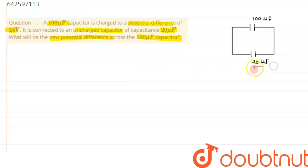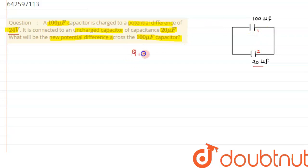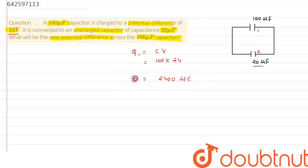One capacitor has a capacitance of 100 microfarad and another has a capacitance of 20 microfarad. Initially the 100 microfarad capacitor is charged to a potential difference of 24 volts. Therefore the charge developed on capacitor one — using the formula Q = CV — is 100 microfarad times 24, which gives us 2400 microcoulombs.